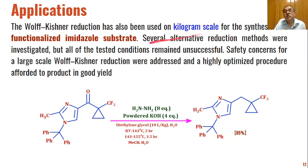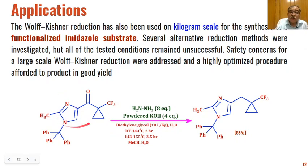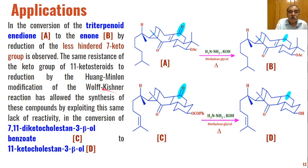Another application is the synthesis of functionalized imidazole substrates on an industrial scale under Wolf-Kishner conditions. Using 8 equivalents of hydrazine, 4 equivalents of powdered potassium hydroxide, and diethylene glycol with water as solvent, an imidazolium derivative carbonyl compound is reduced to the corresponding methylene group in 85% yield. Similarly, triterpenoids such as triterpenoid indione, which contains two carbonyl groups, undergo selective reduction of the less hindered C-7 keto group by hydrazine and KOH under Wolf-Kishner conditions.